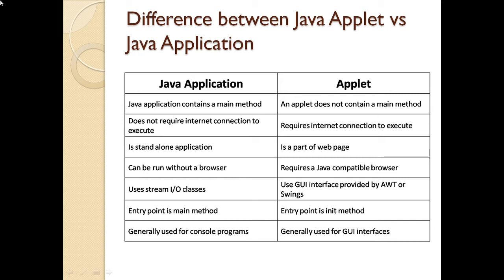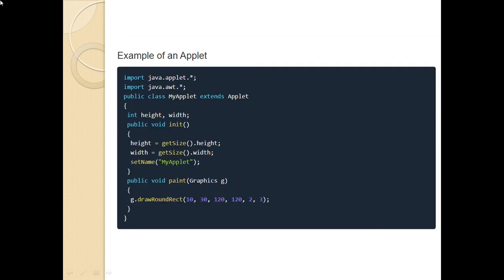Now, proceeding further, let's see an example of an applet. To execute a program or to write a program in applet, we need to import the packages java.applet and all the subdirectories dot star. And we also need a GUI interface that is we have seen AWT packages. So, I import that as well. I have created a class myapplet.